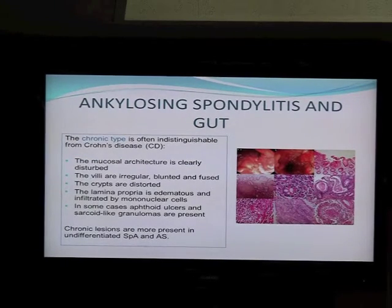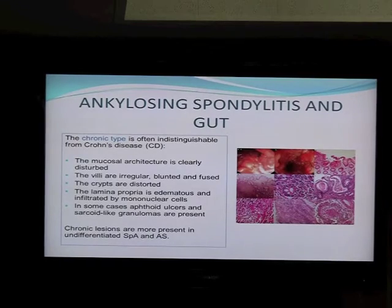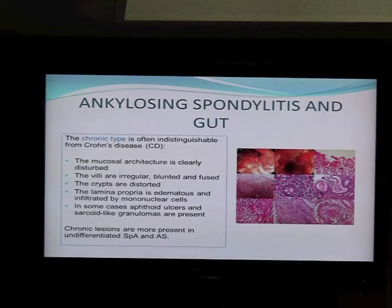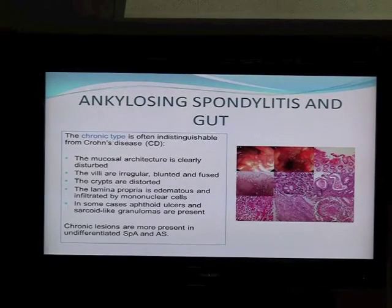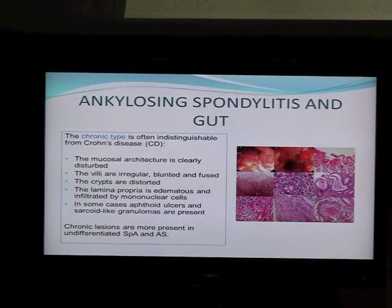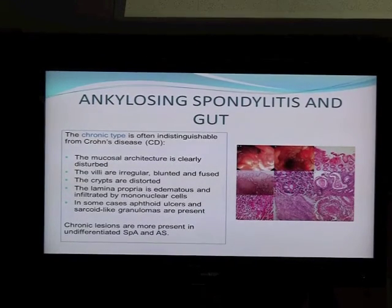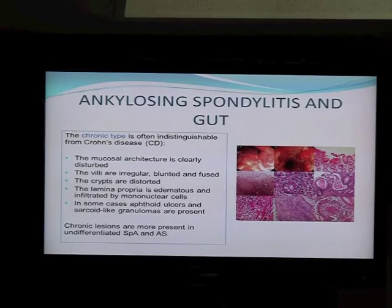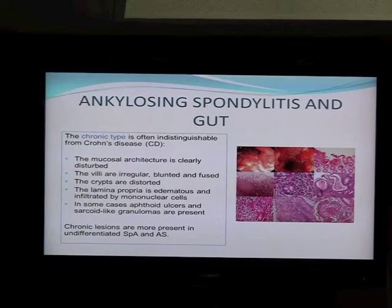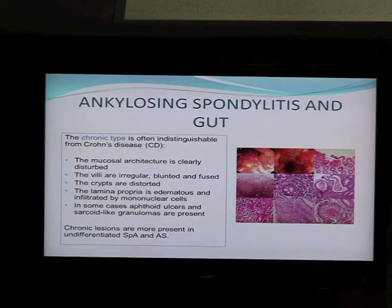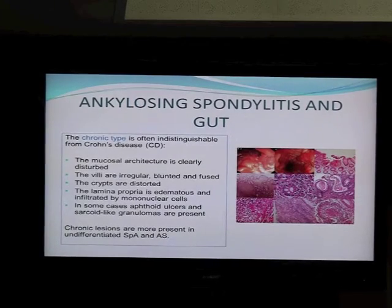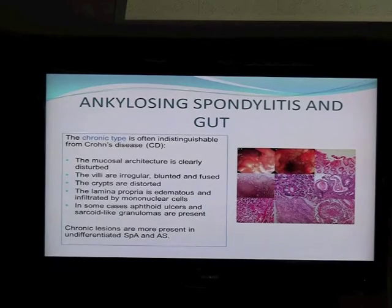In patients with spondylitis and undifferentiated spondyloarthropathies, we typically see findings which look similar to Crohn's disease. It's not typically Crohn's disease, but if you look at the biopsy without knowing the clinical history, most pathology reports would say it sounds very suspicious for Crohn's disease. Histologically and on gross morphology, they look very similar to Crohn's disease — these changes can be seen in at least half of patients with ankylosing spondylitis.